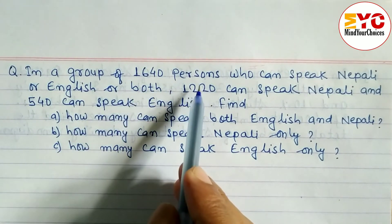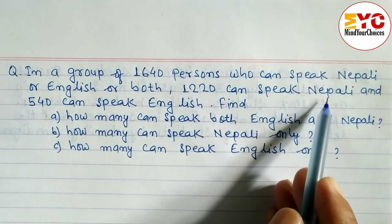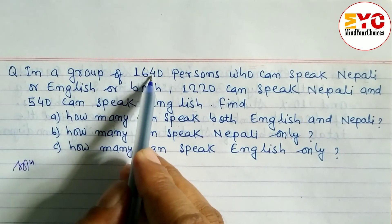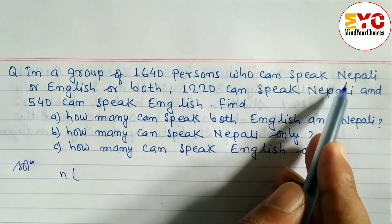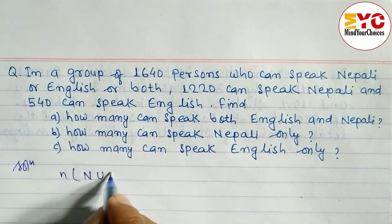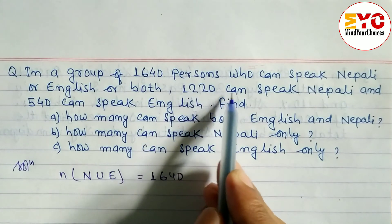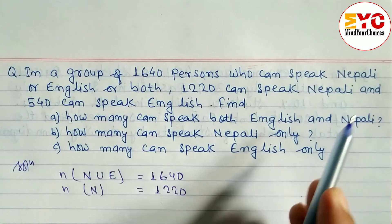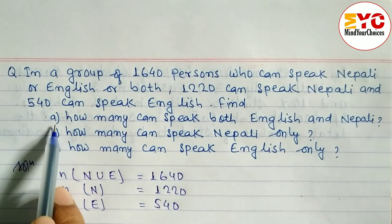In a group of 1640 persons who can speak Nepali or English or both, 1220 can speak Nepali and 540 can speak English. The total number who speak Nepali or English or both — that is, the union — is equal to 1640. The number who speak Nepali N(N) = 1220, and the number who speak English N(E) = 540.